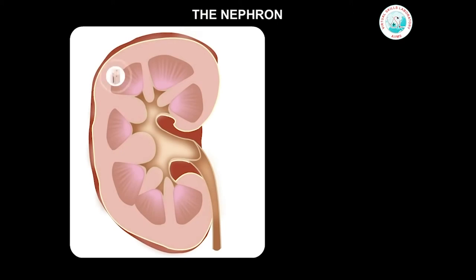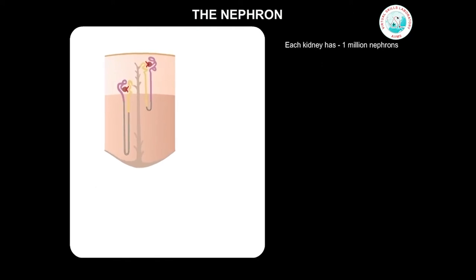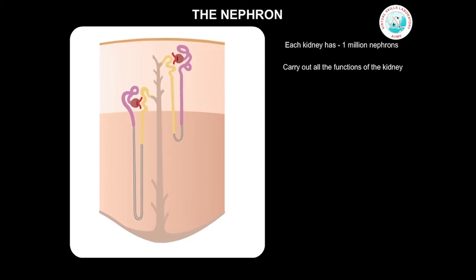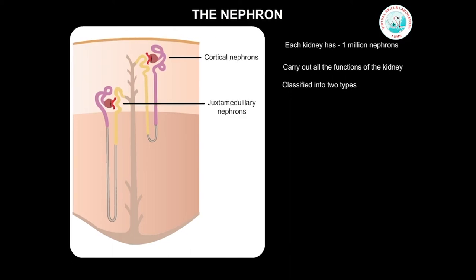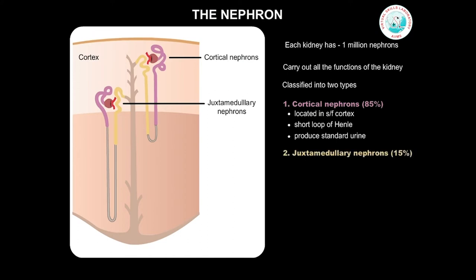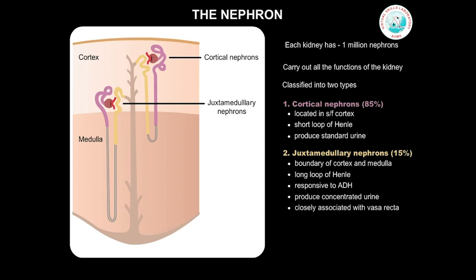Just like the functional unit of the lung is the alveolus, the structural and functional unit of the kidney is the nephron. Each kidney has around 1 million nephrons, which carry out all the functions of the kidney. The nephrons are classified into two types based on their location and the length of their loops: cortical nephrons and juxtamedullary nephrons. All nephrons have their corpuscles in the cortex. 85% of the nephrons are cortical nephrons, located in the superficial cortex; they have a short loop of Henle, so also known as short loop nephrons, and produce standard urine. The remaining 15% are juxtamedullary nephrons found at the boundary of cortex and medulla; they have a long loop of Henle that extends deep into the medulla, are responsive to ADH and produce concentrated urine, and are closely associated with vasa recta.